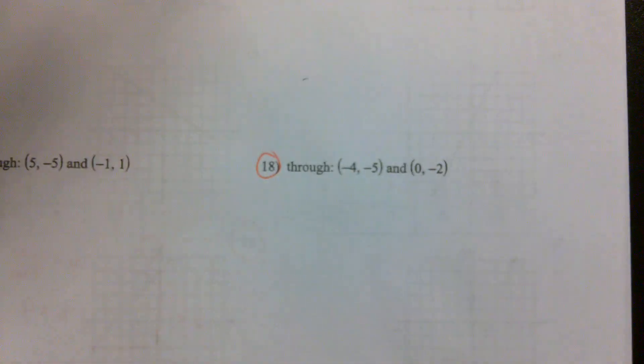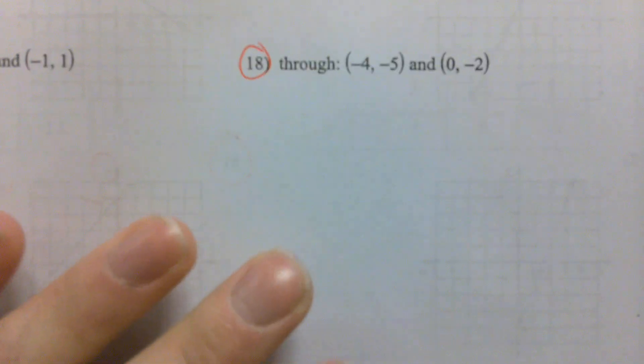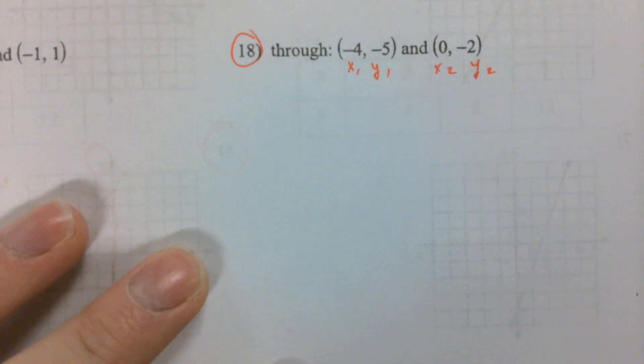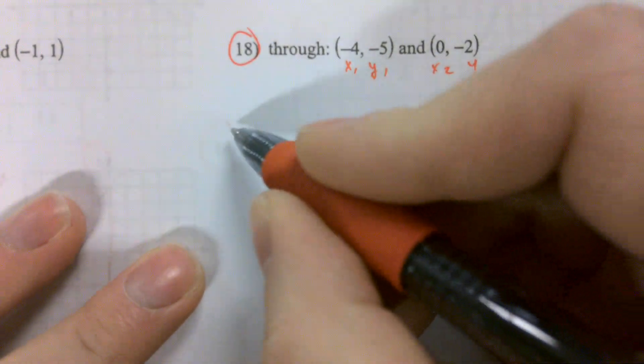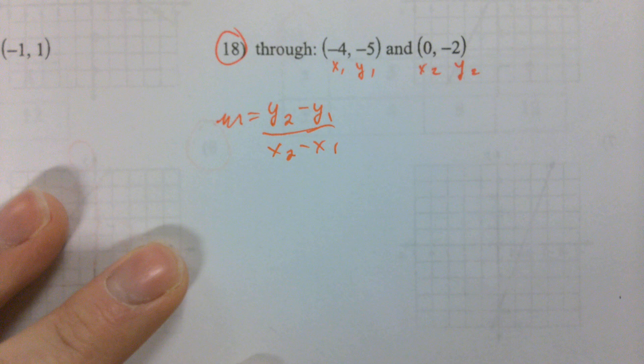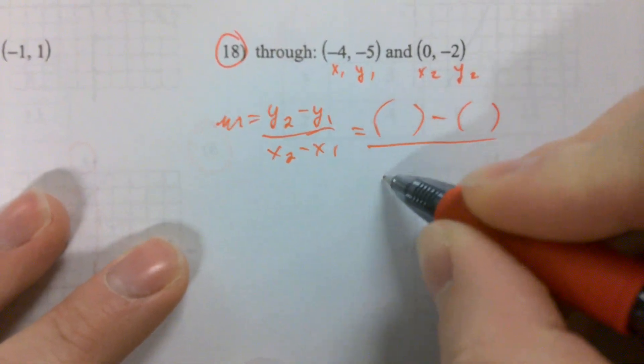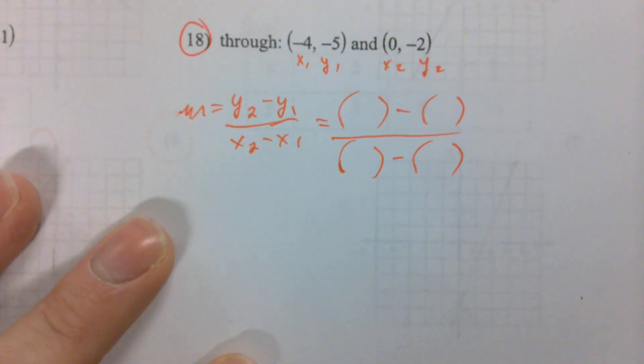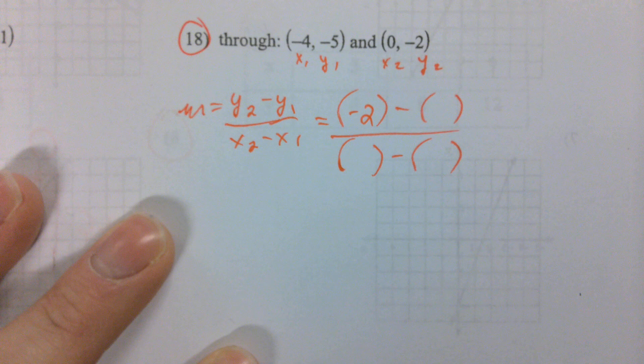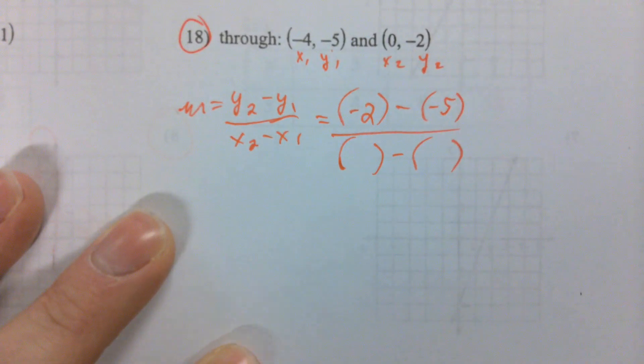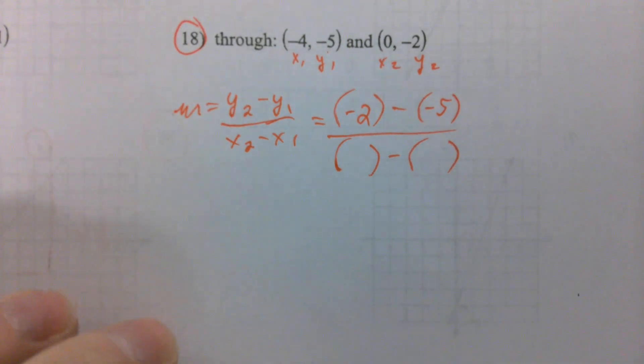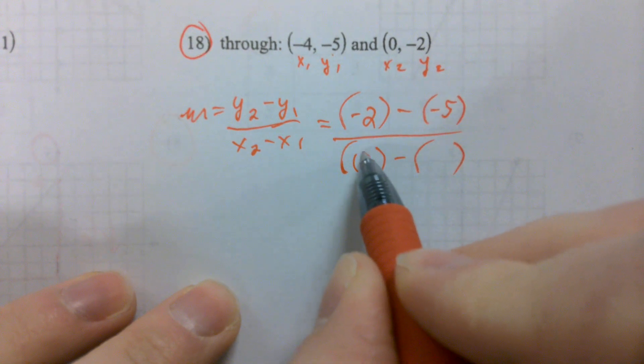Now, slope formula. We take a look down at 18. Whenever you see two points like this and we've got to find the slope, your brain should automatically go X1, Y1, X2, Y2. And we're going to plug them in. M is equal to Y2 minus Y1 over X2 minus X1. I'm going to take out all those variables and replace them with some parentheses so I can plug my numbers in. What number should I plug in first? Negative 2. Y2 goes first. Negative 2 minus Y1, which is negative 5.